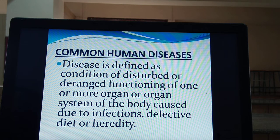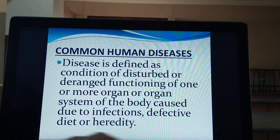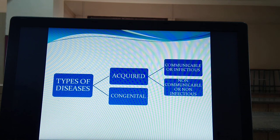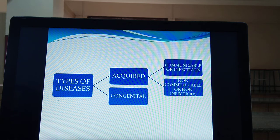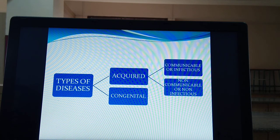When an organ, system, or part of the body cannot work properly, we say it is a disease. Diseases in humans are categorized into two types: acquired and congenital. Congenital diseases are those present right from birth — they are genetically transferred from parents to offspring and cannot practically be cured.